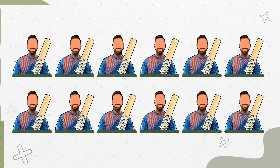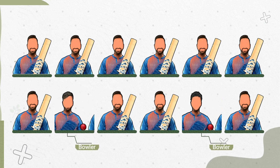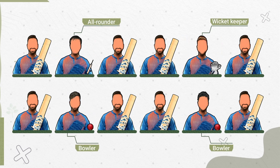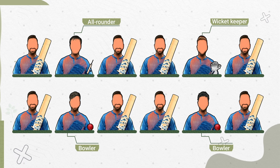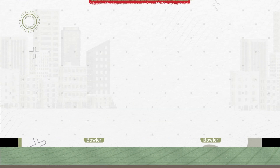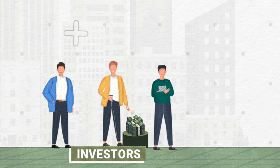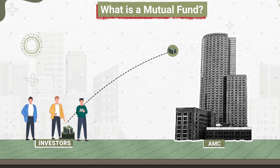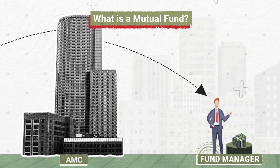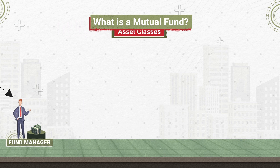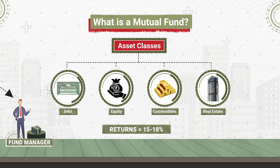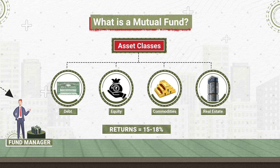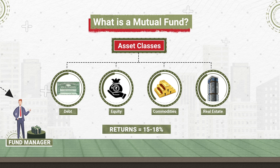To build that cricket team, you require a good batsman, a good bowler, and a wicketkeeper — only then will that team actually function. Similarly, a mutual fund does not invest only into a single asset class or a single security. It takes the approach of investing in various different asset classes so that you get the benefit of all different assets and not just the risk of a single asset class.